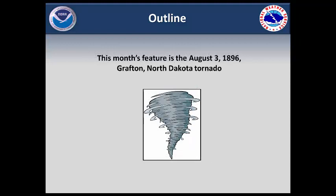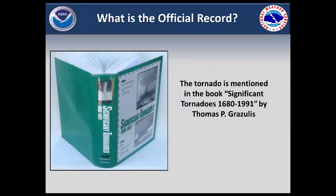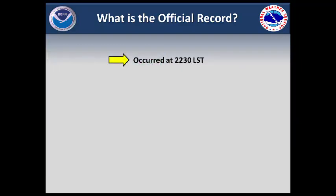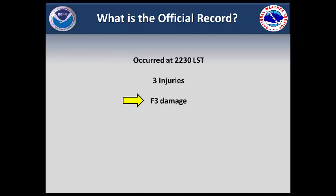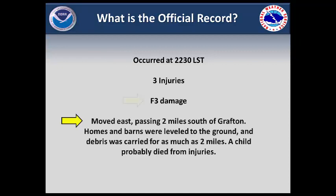So let's take a closer look at the August 3, 1896 Grafton tornado. There is no documentation of this tornado in official National Weather Service records. Very little weather information remains from 1896. However, the tornado was included in the book Significant Tornadoes by Thomas Grazulius. According to that book, the tornado hit at 2230 local standard time, caused three injuries, caused F3-related damage, and then moved east.